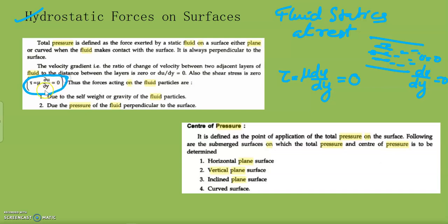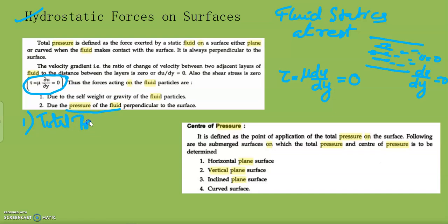In a fluid at rest, shear stress is zero and velocity gradient is zero. The only forces acting on the fluid particle are self-weight and pressure of the fluid. We will focus mainly on the total pressure acting by the fluid on a surface. To deal with that, we need two definitions: total pressure and center of pressure.